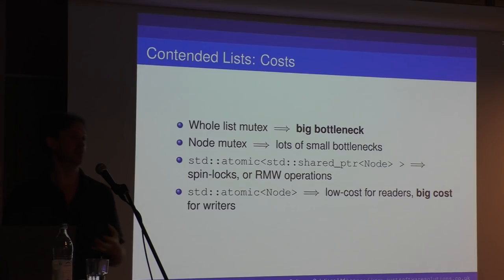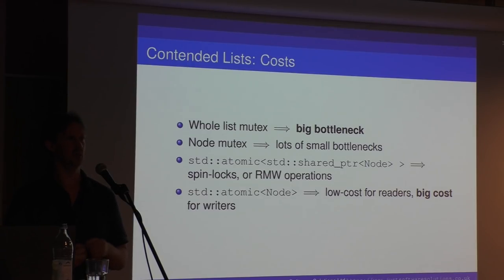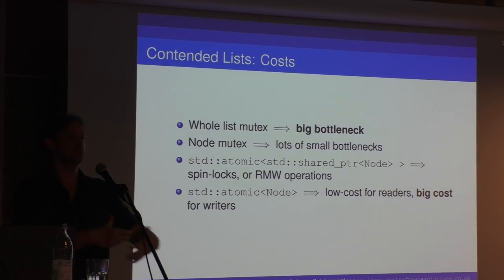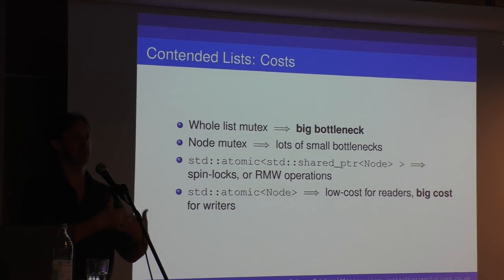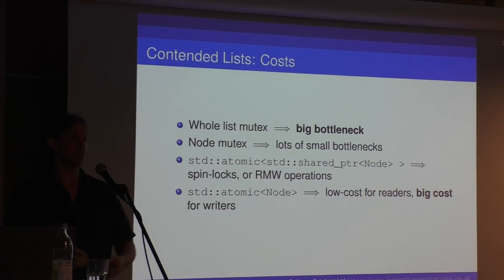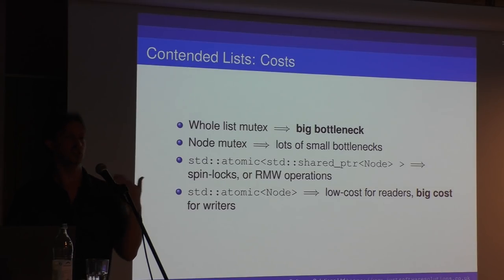Atomics of shared pointer don't help a lot either, because you end up doing a lot of reference count adjustments — and what's a reference count adjustment? That's a read-modify-write operation. If all the threads are doing reference count operations on the same set of reference counts, you're back to essentially a load of little bottlenecks. In fact, atomic of shared pointer might even be implemented with a mutex on common implementations. Another option is to use atomic raw pointers with some form of safe memory reclamation scheme. This is typically good if mostly your data structure is read-only.